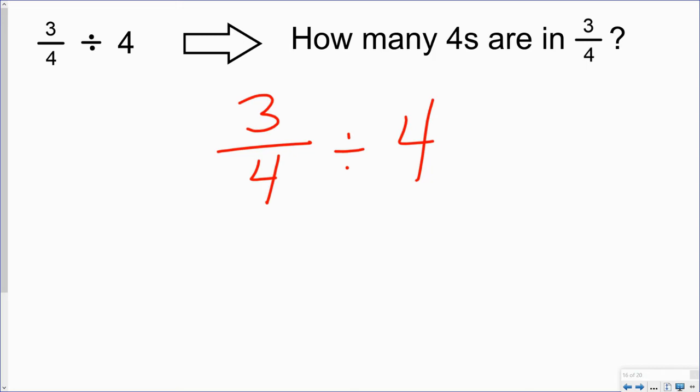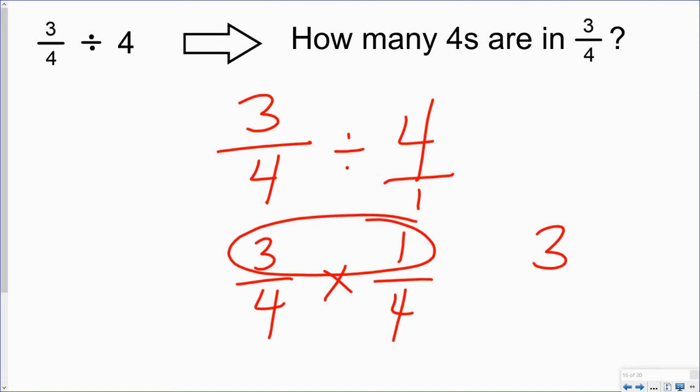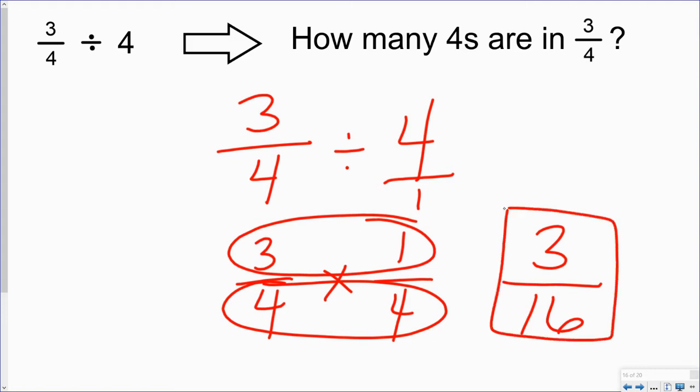And again, keep my first fraction as it is. Change that to multiplication and find the reciprocal or flip my second number. And again, that's 4 over 1, so that would become 1 over 4. 3 multiplied by 1 is 3. 4 multiplied by 4 is 16. And so my answer would be 3 sixteenths.